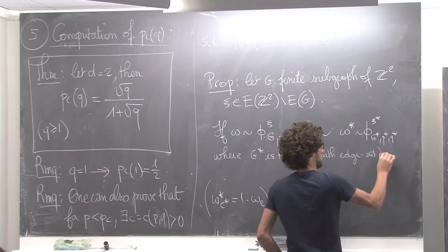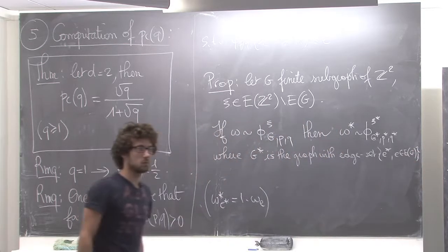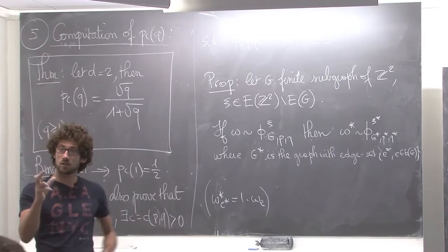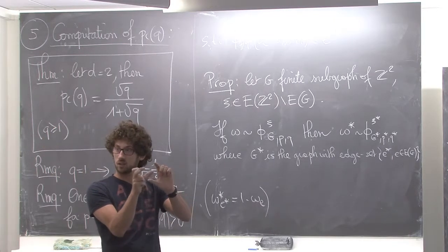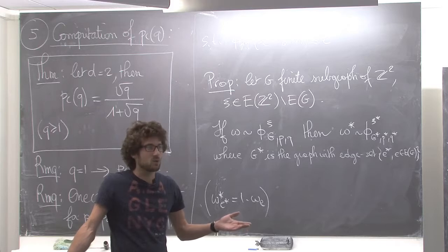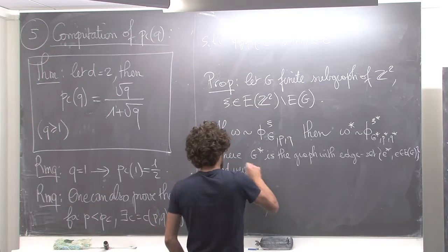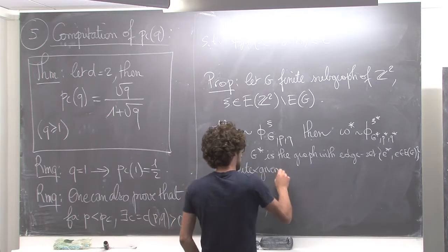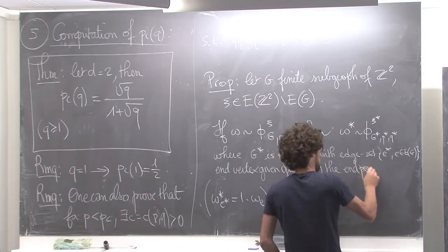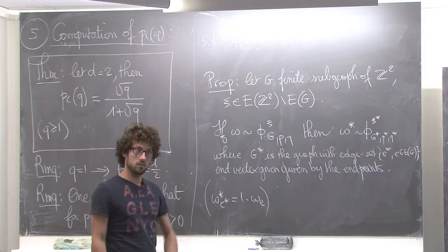G* is a graph with edge set consisting of {e* : e ∈ edges of G}. You construct the dual graph by saying the edges of the dual graph are the dual edges associated to the edges of the primal one. And the vertex set is given by the endpoints of these dual edges.